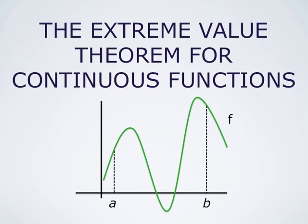The extreme value theorem is an important property of continuous functions. It states that a function f, which is continuous on a closed interval from a to b, attains its minimum and maximum values on that interval. In the case of this function f, whose graph is the green curve shown in the picture, the minimum value is attained at the point x equals e and the maximum value at x equals d.